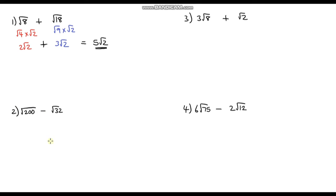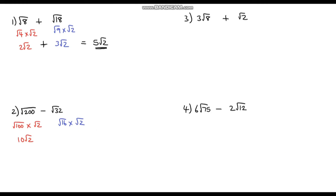Question 2: root 200 minus root 32. Let's simplify root 200 — I can see that is the same as 100 times 2, so that's root 100 times root 2. And root 32, I can see that is 16 times 2, so that is root 16 times root 2. The square root of 100 is 10, so we get 10 root 2. The square root of 16 is 4, so that is 4 root 2. So 10 root 2 minus 4 root 2 gives us 6 root 2.